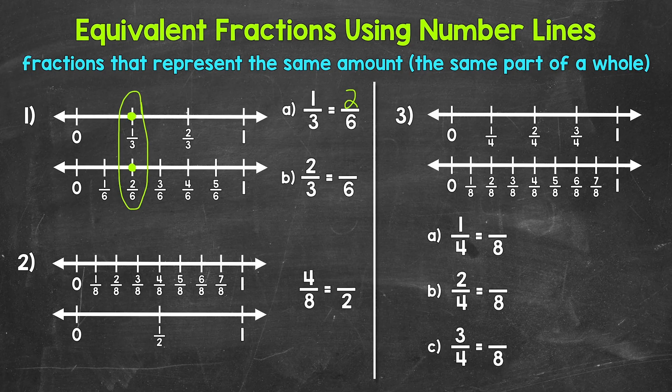Moving on to B, we have 2 thirds is equivalent to how many sixths? 2 thirds is right here. Right below, we can see that 4 sixths is at the same place on the number line. 2 thirds and 4 sixths are equivalent fractions.